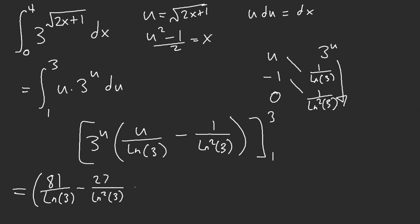And then minus... Then we plug in 1. Right? So we get 3 over ln of 3 plus 3 over ln squared of 3.